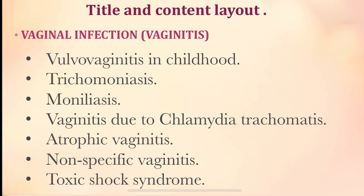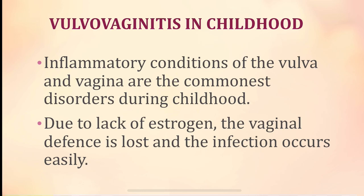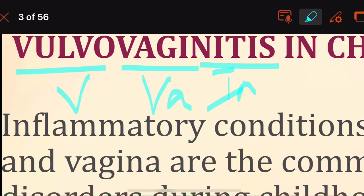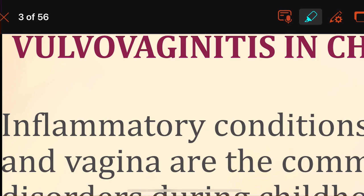Starting with vulvovaginitis in childhood. You can split the word into three parts: vulvo, vagina, and itis. Vulvo is the vulva, vagina is the vagina, and itis is inflammation — so it is the inflammation of the vulva and vagina occurring in childhood.